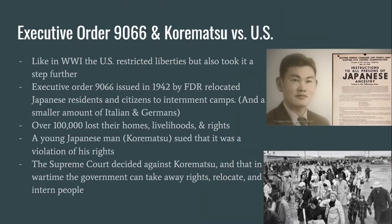While paling in comparison to the totalitarian regimes, the U.S. did curtail rights and targeted specific groups for special treatment. Japanese American residents and citizens under Executive Order 9066 were relocated to internment camps from their homes. They lost their livelihoods, most of their possessions, and their rights. Korematsu, a young Japanese man, had originally evaded the roundup of Japanese in California and hid out. Eventually he was found, but Korematsu sued for his freedom, saying the Executive Order went against the Constitution. His case went all the way to the Supreme Court, who decided against Korematsu and in favor of the order, saying that in wartime the government could take away rights, relocate, and intern people.